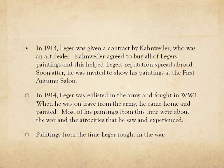In 1913, Léger began to introduce machine shapes and industrial-looking objects into his paintings. This can be seen as a direct influence from World War I. Before this, Cubism had not seen industrial objects being added to paintings, so this was a change in Cubism. In 1914, Léger was enlisted in the Army and fought in World War I. When he was on leave from the Army, he came home and painted. Most of his paintings from this time were about the war and the atrocities that he saw and experienced.